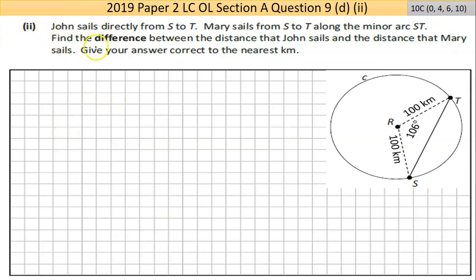Now, D part two here says, John sails directly from S to T, so that distance there of 160 kilometers. Mary sails from S to T along the minor arc. So Mary sails around like this. So it was obviously a longer distance. Now find the difference between the distance that John sails and the distance that Mary sails. Give your answer in kilometers. We have that 160. That's what John sails. Now Mary is sailing that part of the circle. So that part of the circle represents 106 of the 360 degrees of the circle. So like almost a third of it. So if the circle was 300 and she sailed a third of it, she's sailing a hundred. So we define that by getting the circumference of a circle and then getting that part of the full circle. So we're multiplying it by the segment.